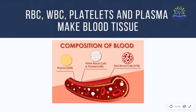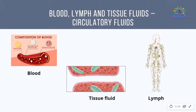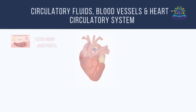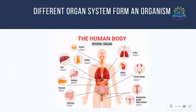Consider the example of blood. RBC, WBC, platelets and plasma make blood tissue. Blood, lymph and tissue fluid together form circulating fluids. Circulating fluids, blood vessels and heart form the circulatory system. Different systems such as circulatory system, respiratory system, digestive system, etc., together form an organism.